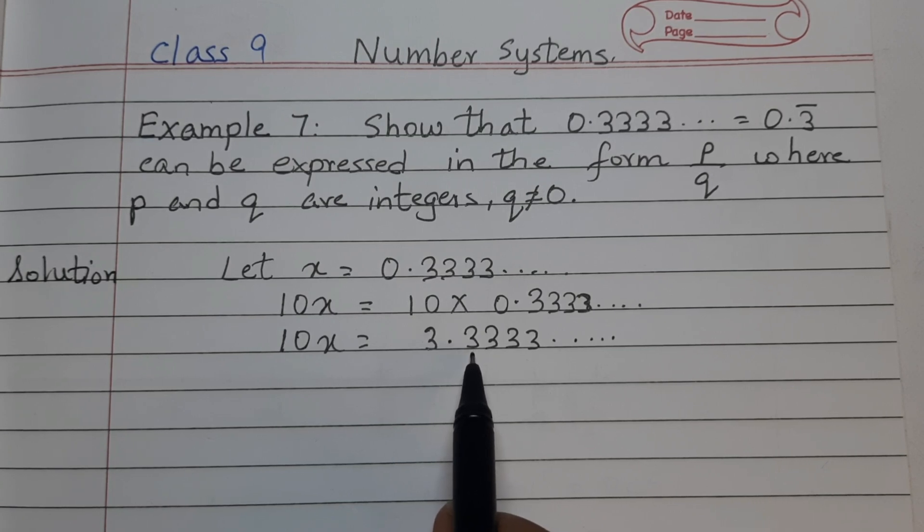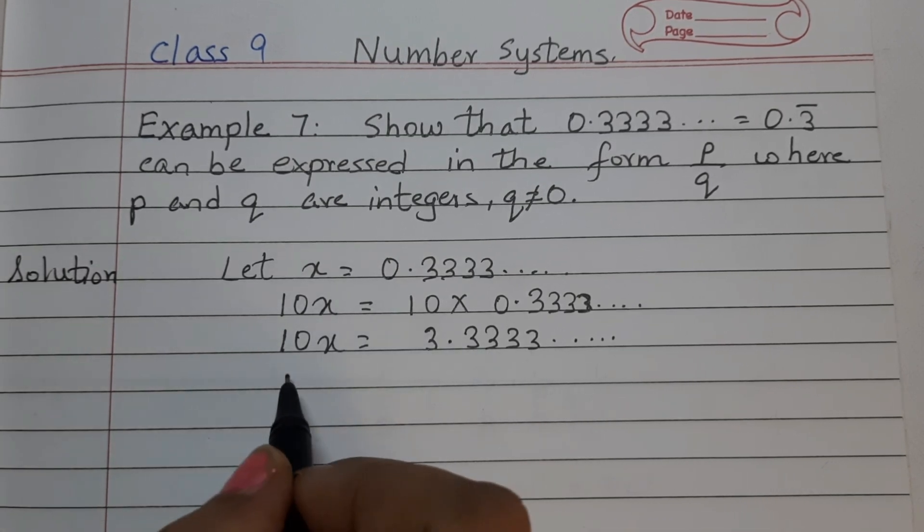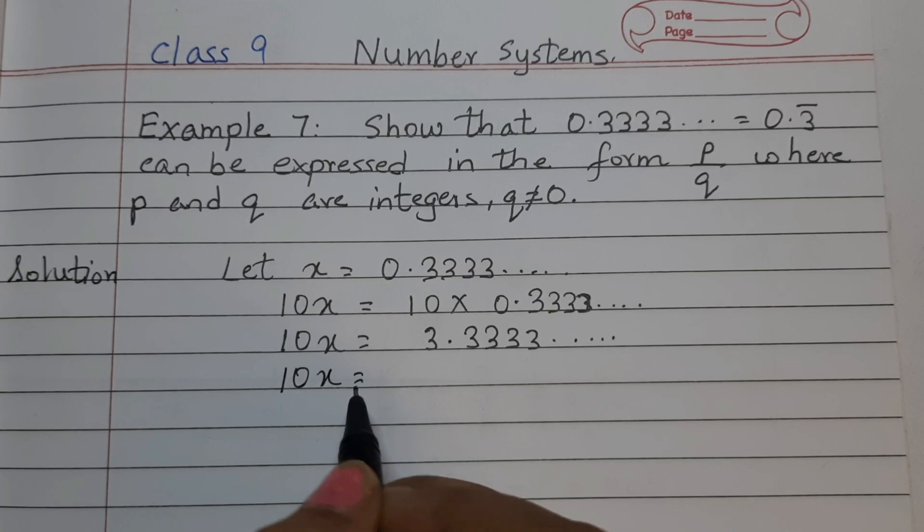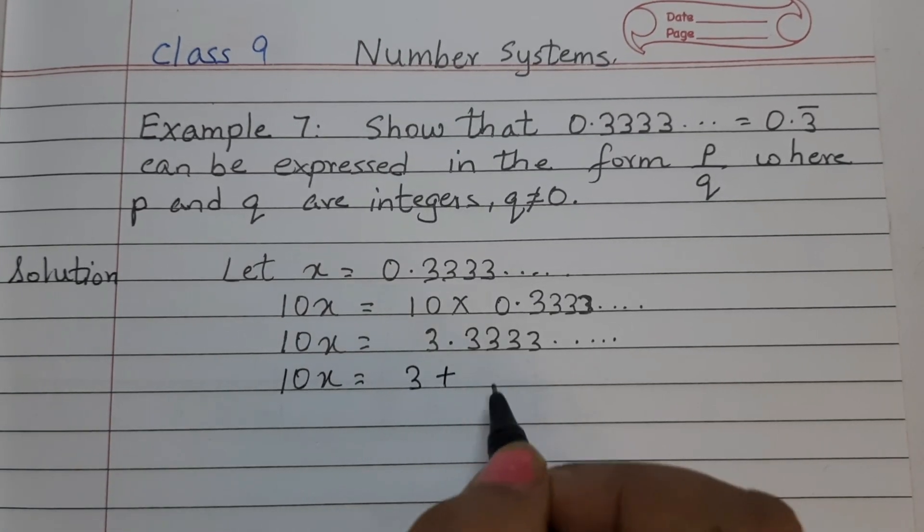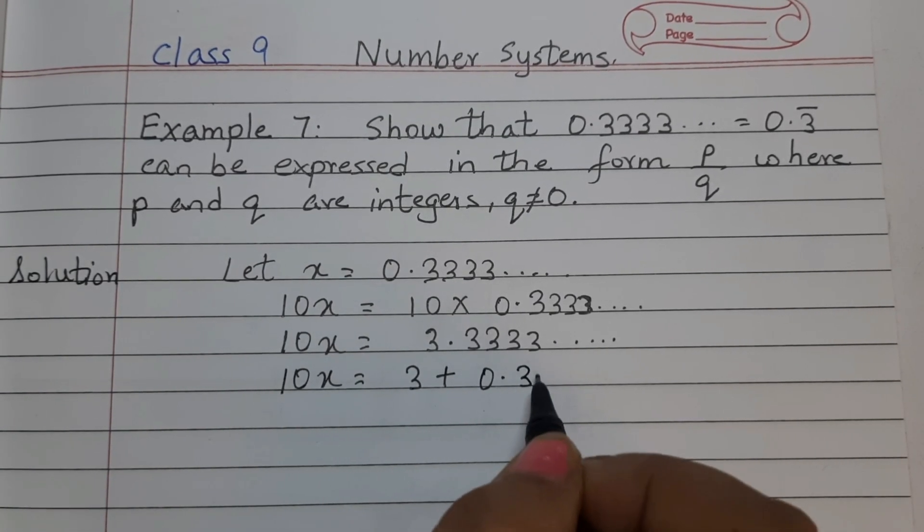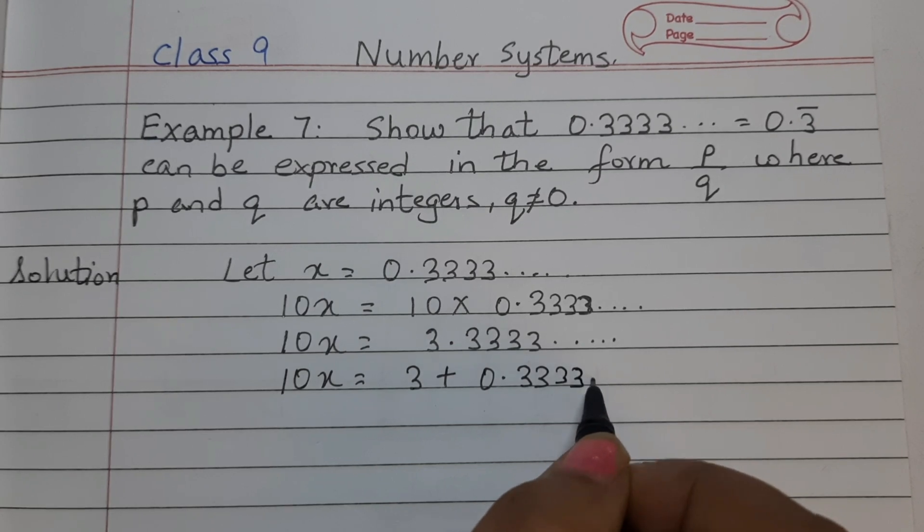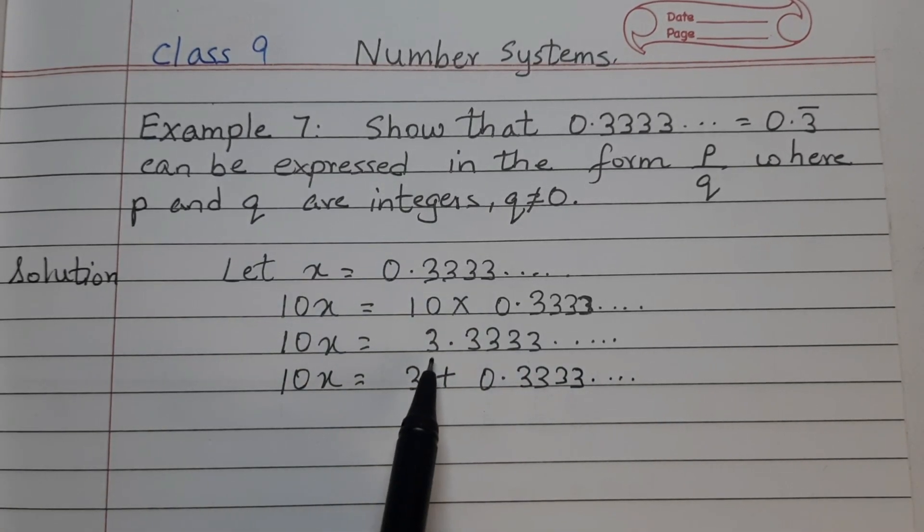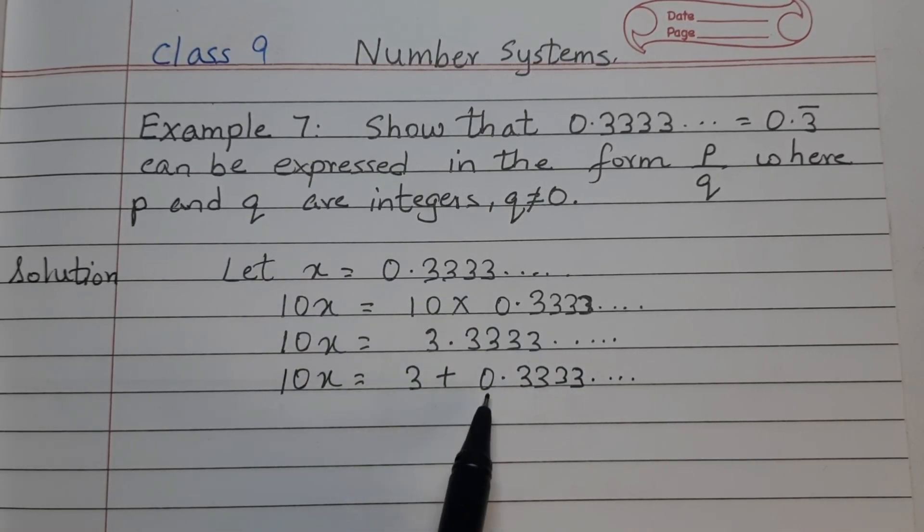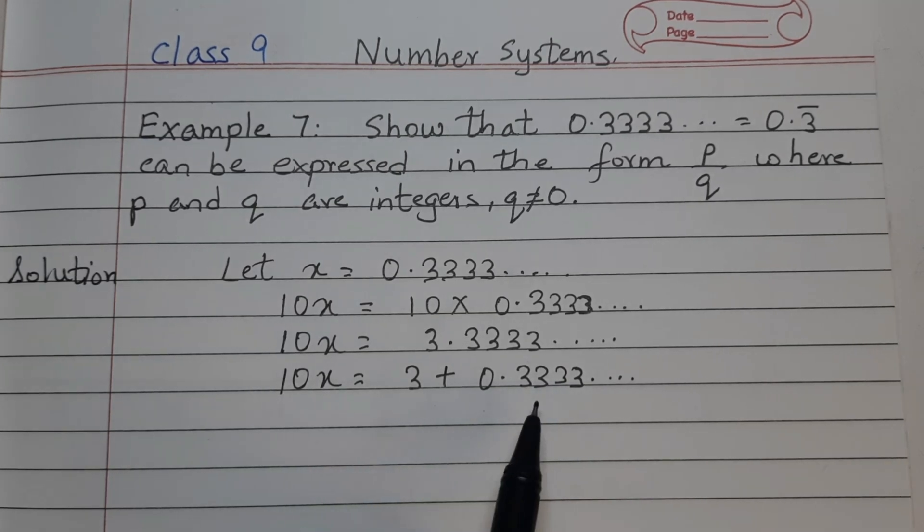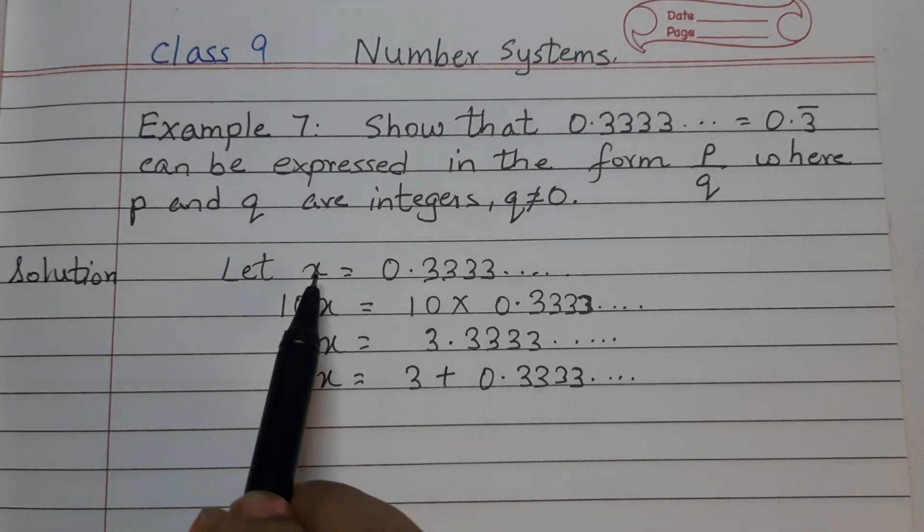Now write this as a whole number and a decimal expansion. So 10x is equal to 3 plus 0.3333. It's the same thing, right? We're just writing this as 3 plus 0.3333. Now if you see, this is actually x that we had taken in the very beginning.